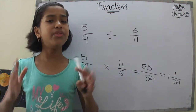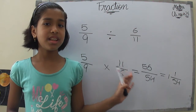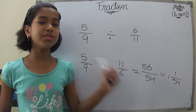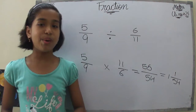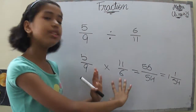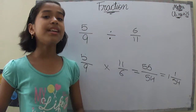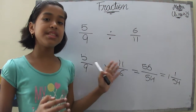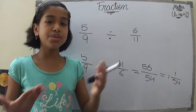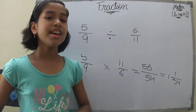You might wonder why we take the reciprocal and change the division into a multiplication problem. That's because division is the reverse of multiplication. So we simply flip the divisor around and then multiply — these two operations are equivalent.